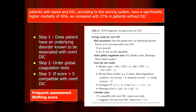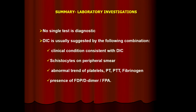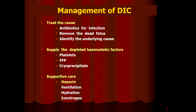Other markers are still in the range of research, not in clinical practice. My lab summary: no single test is diagnostic. It is a combination of clinical picture, schistocytes on smear, abnormal trend of platelets, PT-PTT, fibrinogen, and presence of FDP or D-dimer along with fibrinogen breakdown products — these are the targets which can tell you the patient is going into DIC.